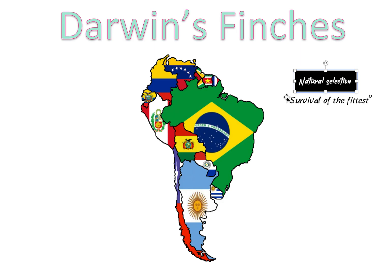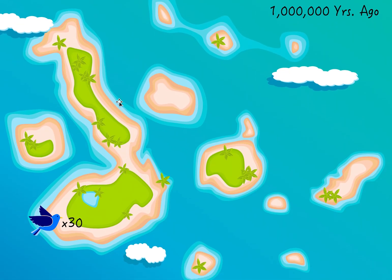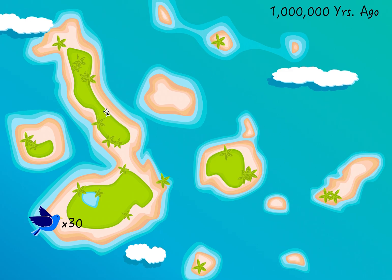Finches are a type of bird, as you'll see shortly. The story of Darwin's finches happened in South America, specifically off the coast of Ecuador. If we go off the coast of Ecuador around here, there is a bunch of islands called the Galapagos Islands, and they look like this.